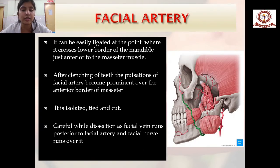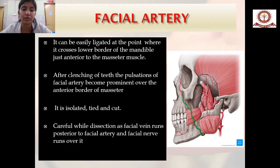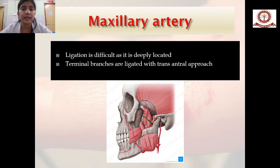The facial artery is a branch of the external carotid artery and can be easily ligated at the point where it crosses the lower border of the mandible just anterior to the masseter muscle. After clenching of teeth, pulsation of the facial artery becomes prominent over the anterior border of masseter; it is then isolated, tied, and cut, with care taken as the facial vein runs posterior to it and the facial nerve runs over it. The maxillary artery is deeply located, so its terminal branches are ligated via a transantral approach.